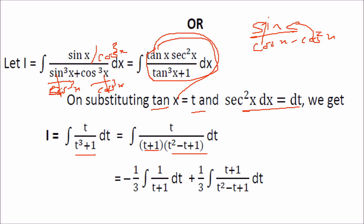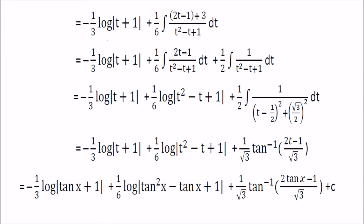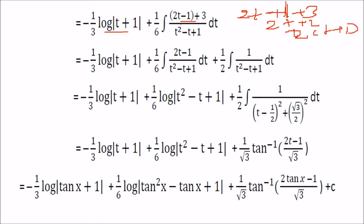Using the factored form and writing t as (t plus 1) minus 1, we separate terms. One part gives minus (1/3) times 1 by (t plus 1) dt, and the remaining term involves t plus 1 over t² minus t plus 1. The first part integrates to log(t plus 1). For the numerator we rewrite it: 2t minus 1 plus 3 gives 2(t plus 1), so we divide by 2 giving a factor of 1/6.